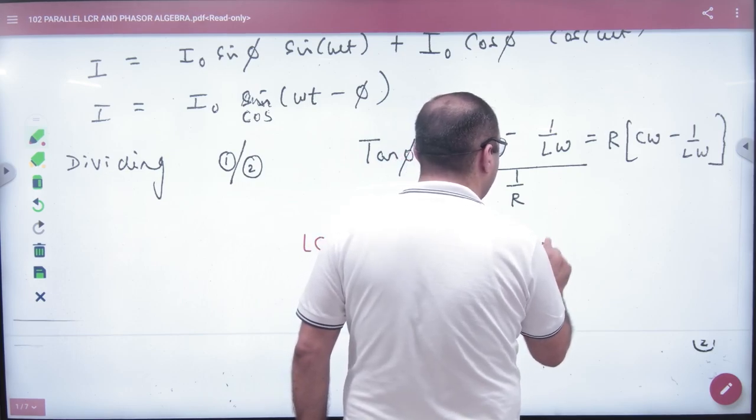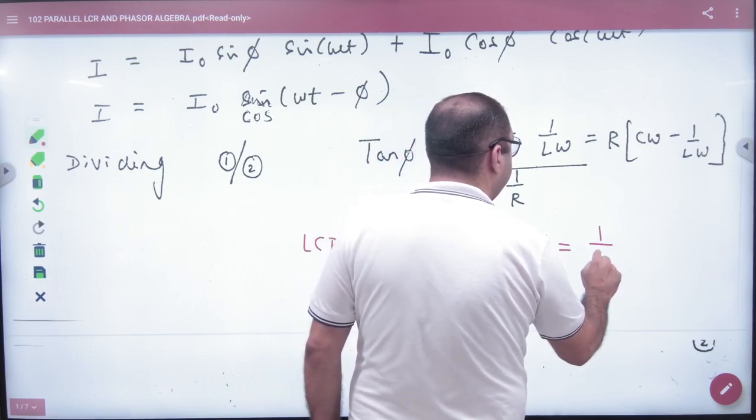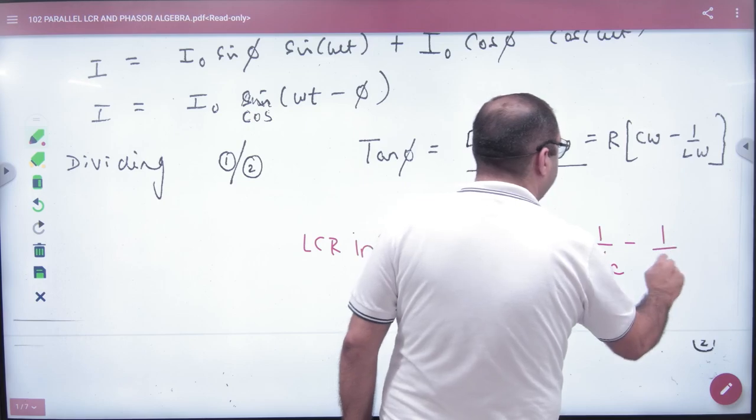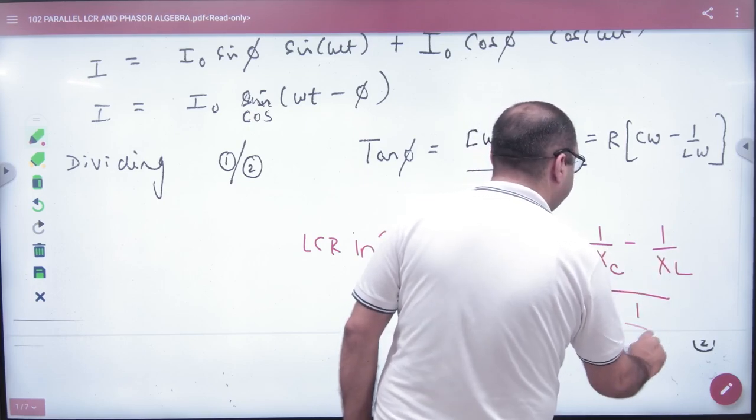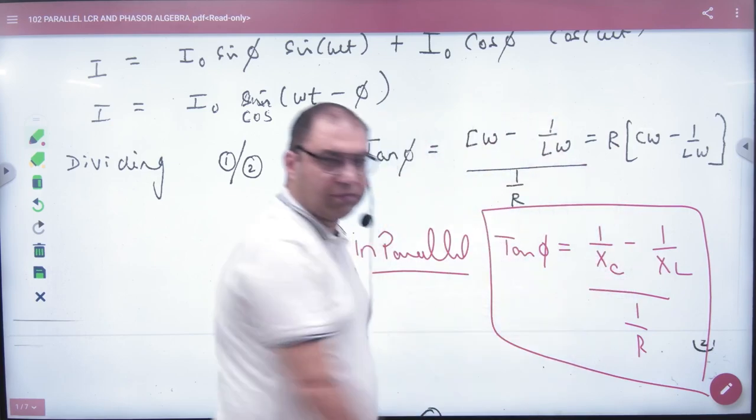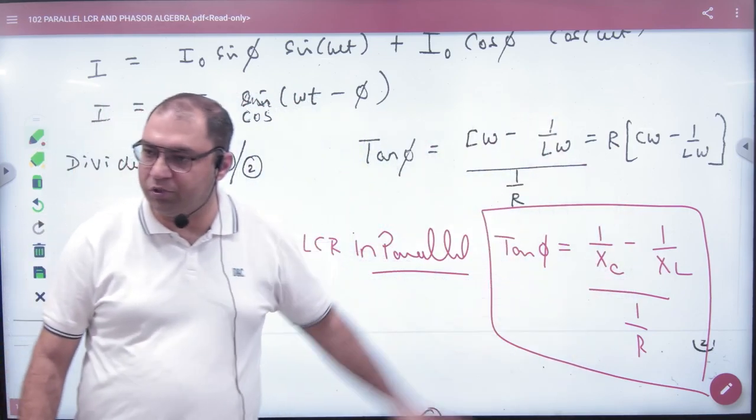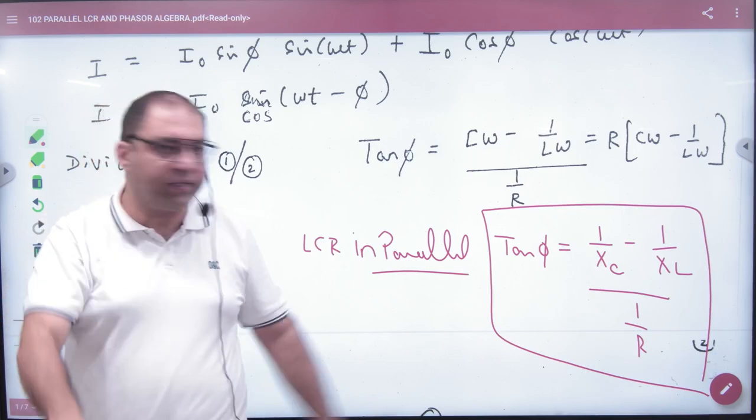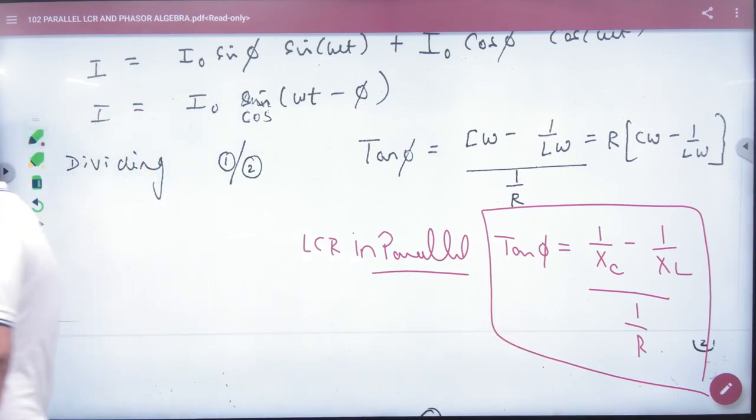We did tan(φ) = R(1/X_C - 1/X_L). Note this, please. Note this tan(φ) formula. Impedance formula - note this. LCR in parallel, and tan(φ) formula - note this. Thank you.